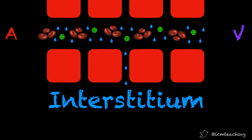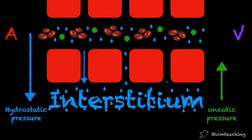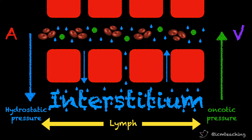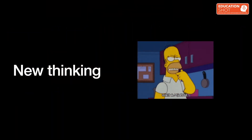I was taught that there's a hydrostatic pressure gradient from the capillaries to the interstitium, down which fluid leaks at the arterial side of the circulation, and an opposing colloid osmotic pressure gradient that draws fluid back into the vessels at the venous end. Any excess fluid is returned to the circulation in the great veins via the lymphatics. But we now have a better understanding of this fluid flux — what is known as the revised or extended Starling principle.